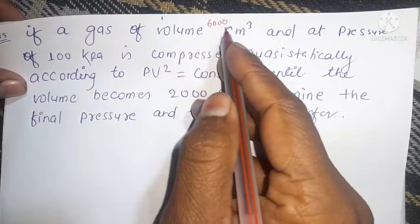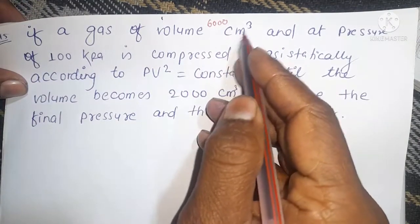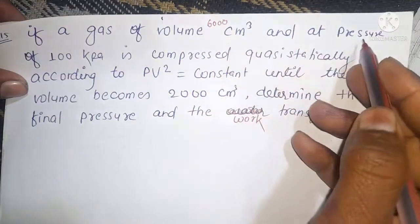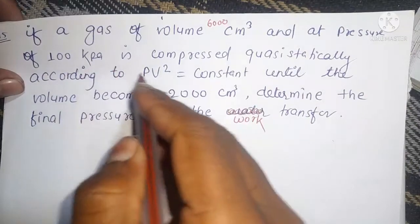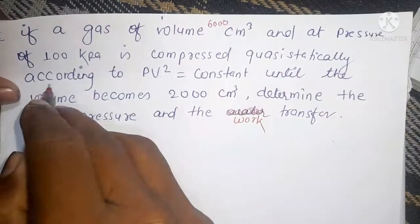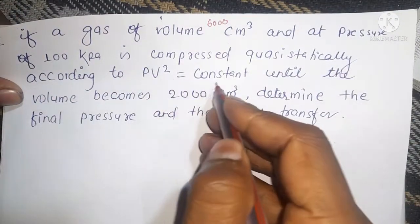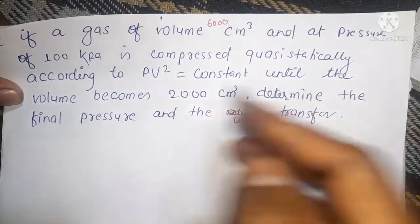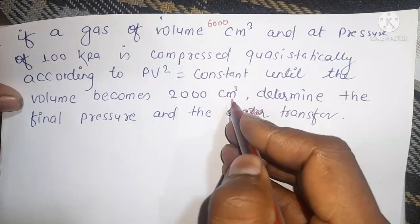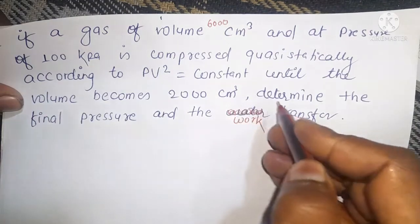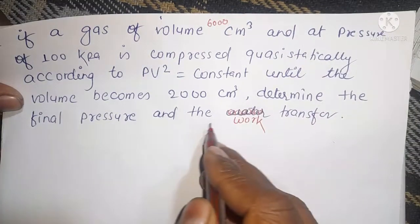If a gas of volume 6,000 cubic centimeter and at a pressure of 100 kilopascal is compressed quasi-statically according to PV² = constant until the volume becomes 2,000 cubic centimeter, determine the final pressure and the work transfer.